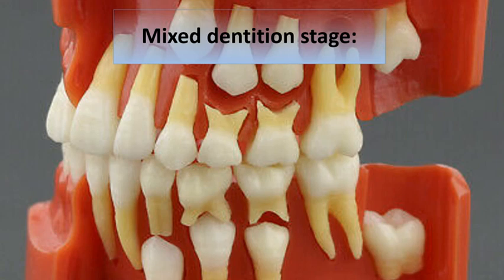The mixed dentition stage starts with the eruption of the first permanent tooth until the shedding of the last deciduous tooth. There are significant changes in occlusion during this period due to the loss of 20 primary teeth and eruption of their successor permanent teeth. Also, most malocclusions are developed at this stage.